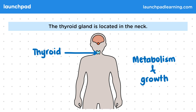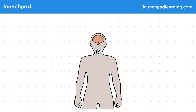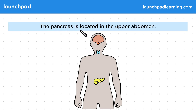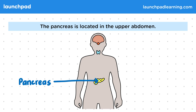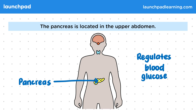Which other glands do you need to know about? The pancreas is located in the upper abdomen. In this diagram, the pancreas is this yellow structure here. This gland plays a role in regulating blood glucose levels, also known as blood sugar.